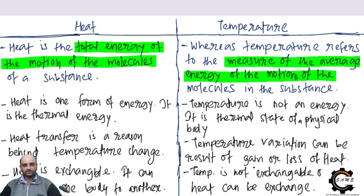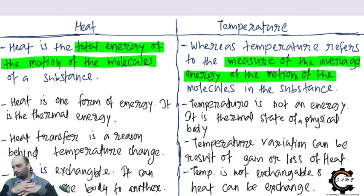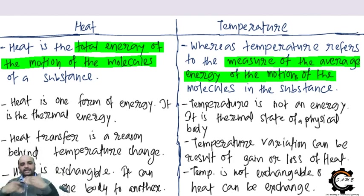The fourth difference: temperature variation can result in gain or loss of heat. Heat is exchangeable — it can flow from one body to another, not like a fluid but like vibrations through conduction or convection. Suppose I am vibrating and someone is sitting beside me — my vibration will push them. That is how heat transfer takes place.